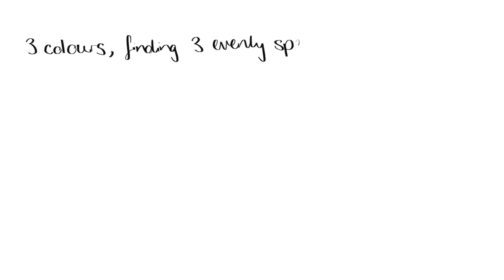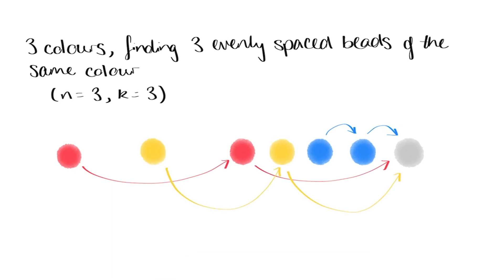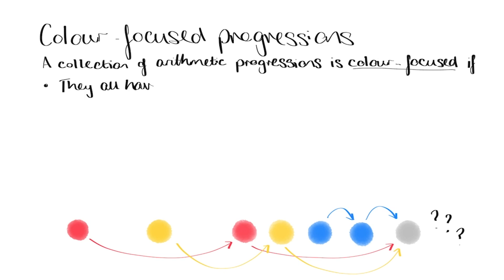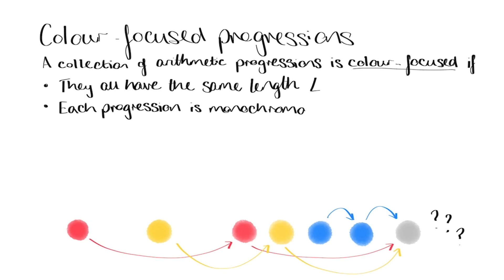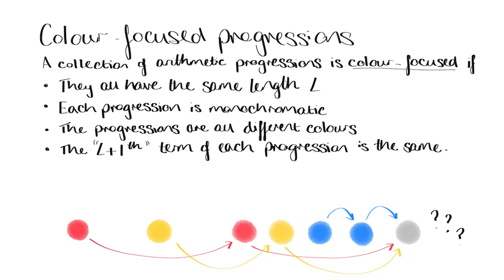Or say we wanted to prove the case n equals 3, k equals 3 — so progressions of length 3 with three different colours of bead: red, blue, and yellow. In this case, we would try and find progressions of length 2 in each one of the three colours, all with the same third term. With this in mind, let's call a collection of arithmetic progressions within our wider chain of beads colour-focused if they all have the same length, they're all monochromatic, different progressions are different colours, and if we consider what the next bead in each sequence would be, then we get the same bead for each progression. The bead shown in grey here is called the focus point of the colour-focused progressions.